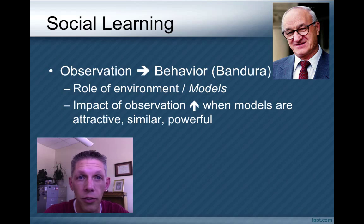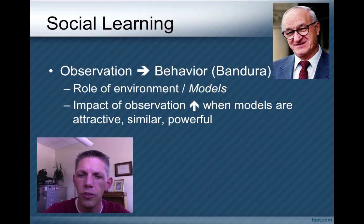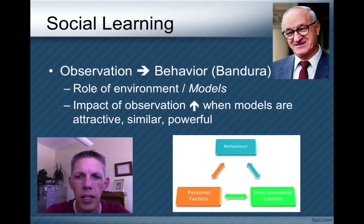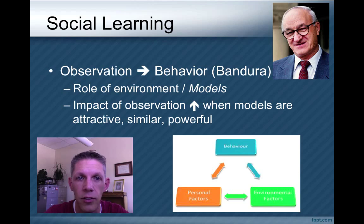The impact of observation goes way up when the models around us are perceived to be attractive — not just physically, but desirable in characteristics we would want. Also when they're similar to us in race, gender, age, and other characteristics, and when we perceive them to be powerful — like a teacher or police officer behaving a certain way, that increases the likelihood of our behaving that way too. Bandura's model holds that behavior is influenced by personal factors as well as environmental factors, and those factors all influence each other — natural reflexes, environmental cues, consequences, and social models all shape behavior.